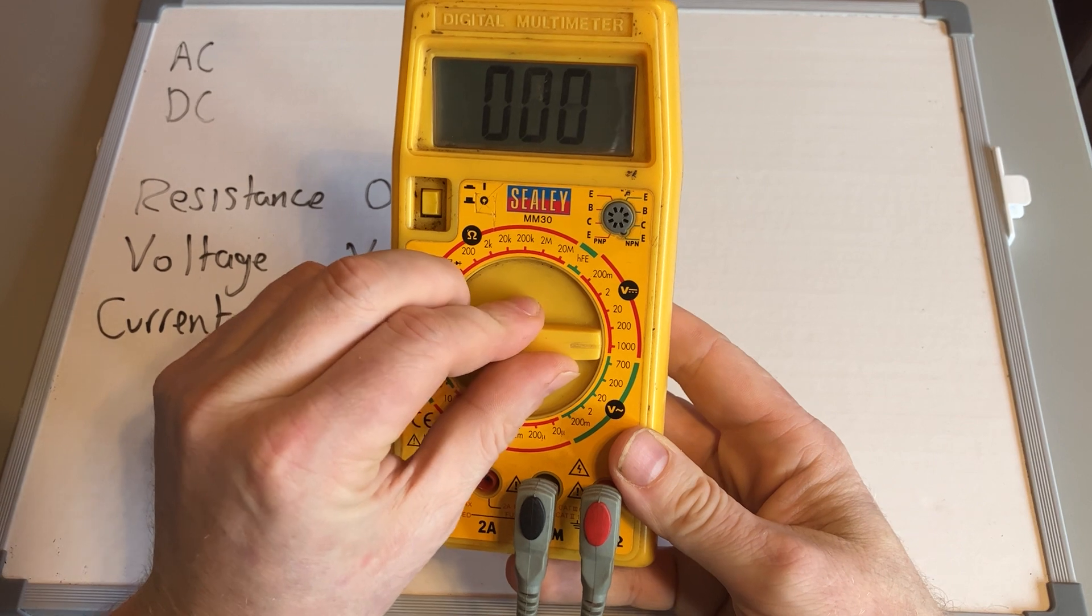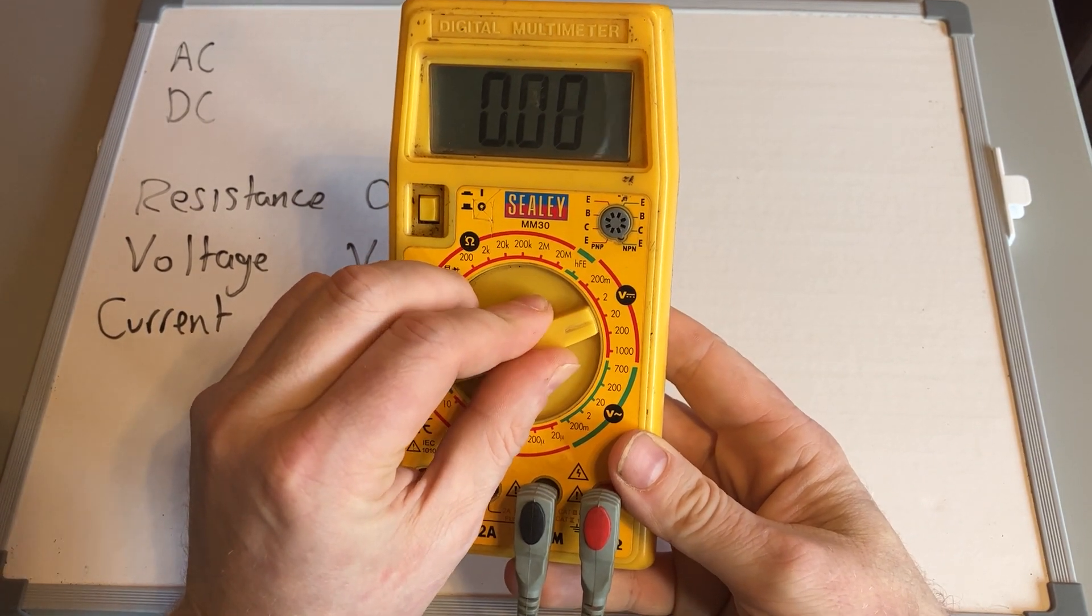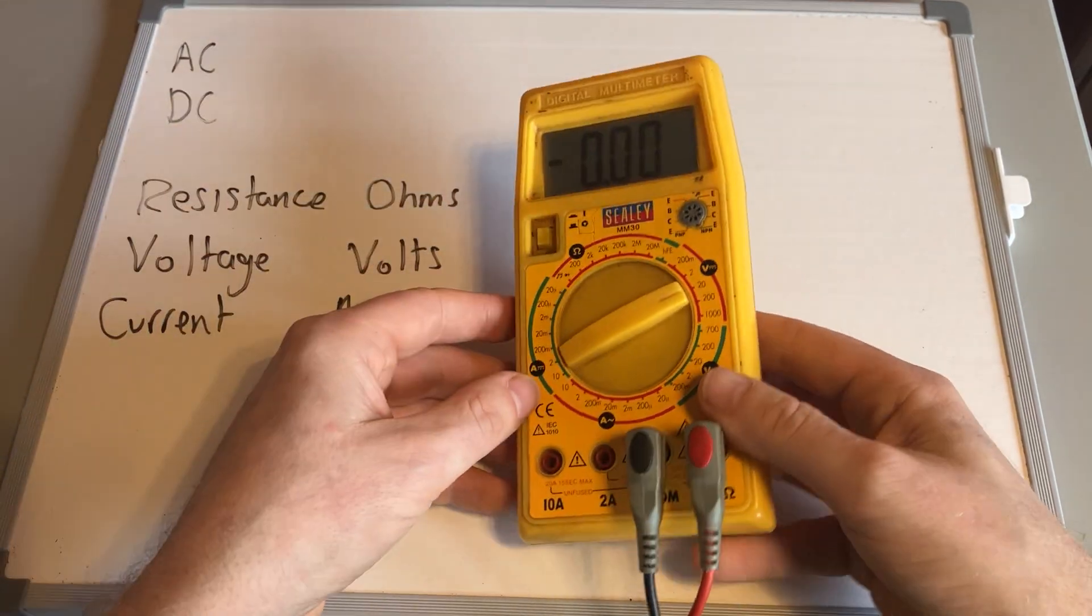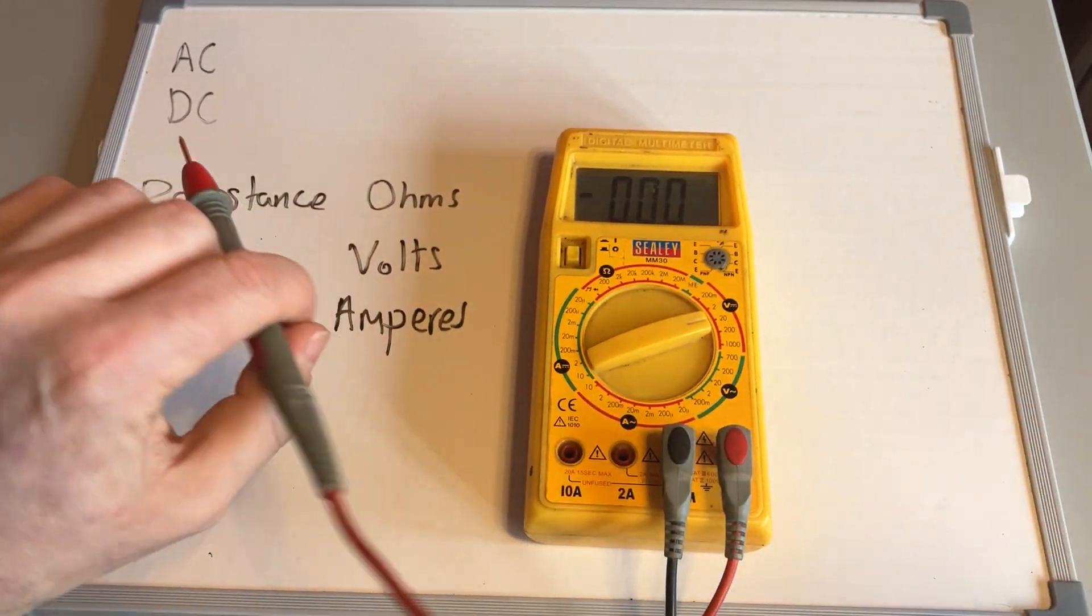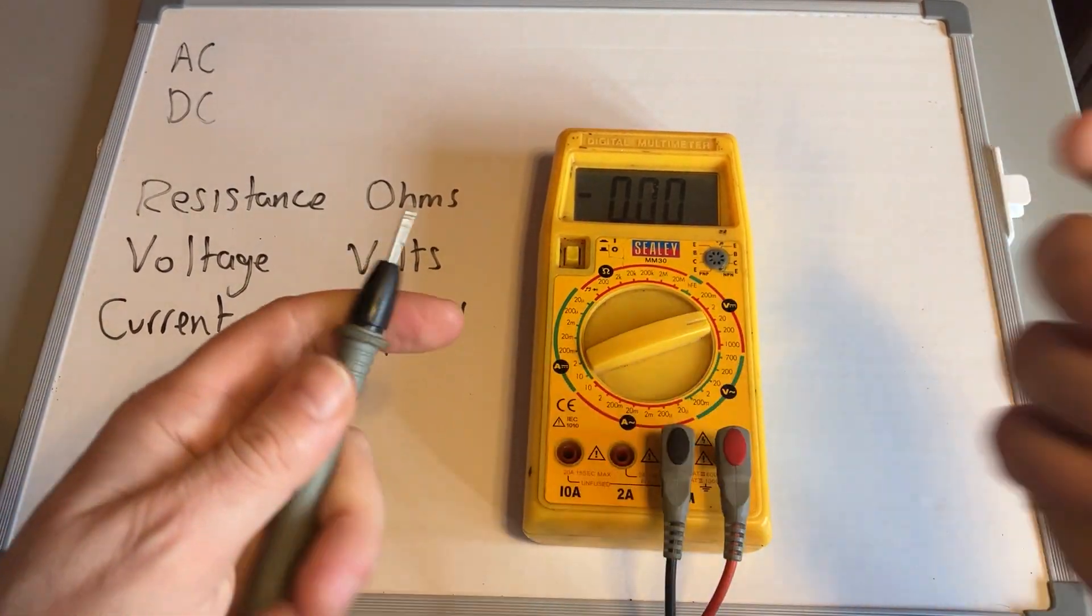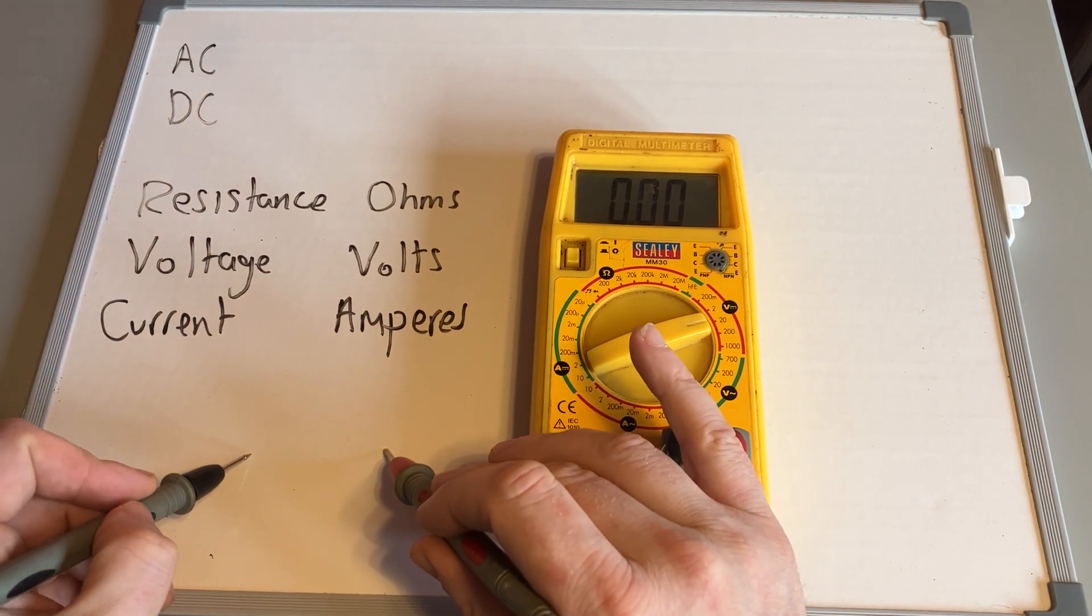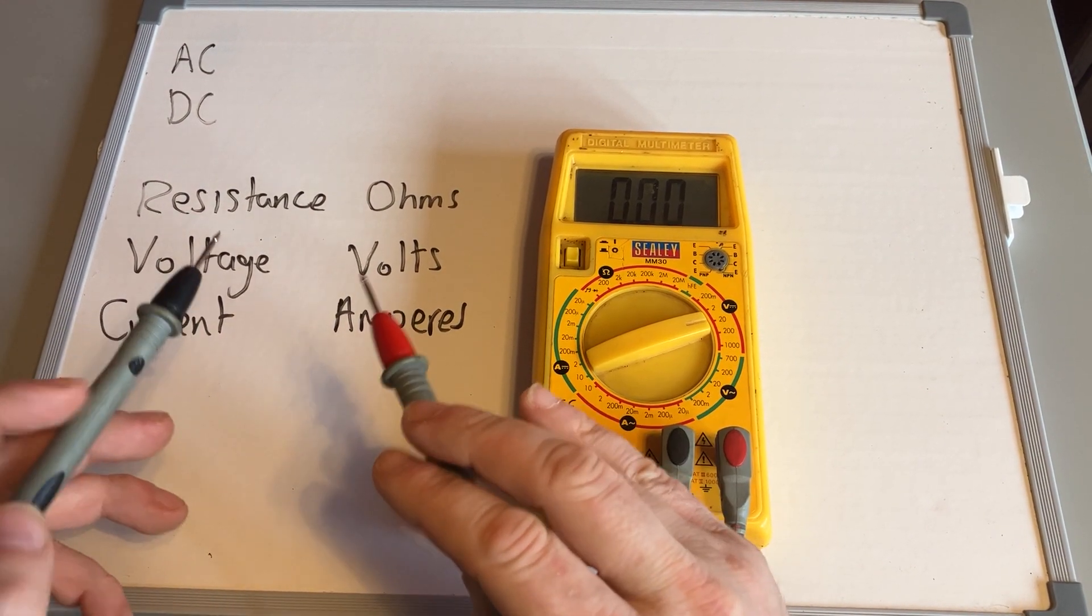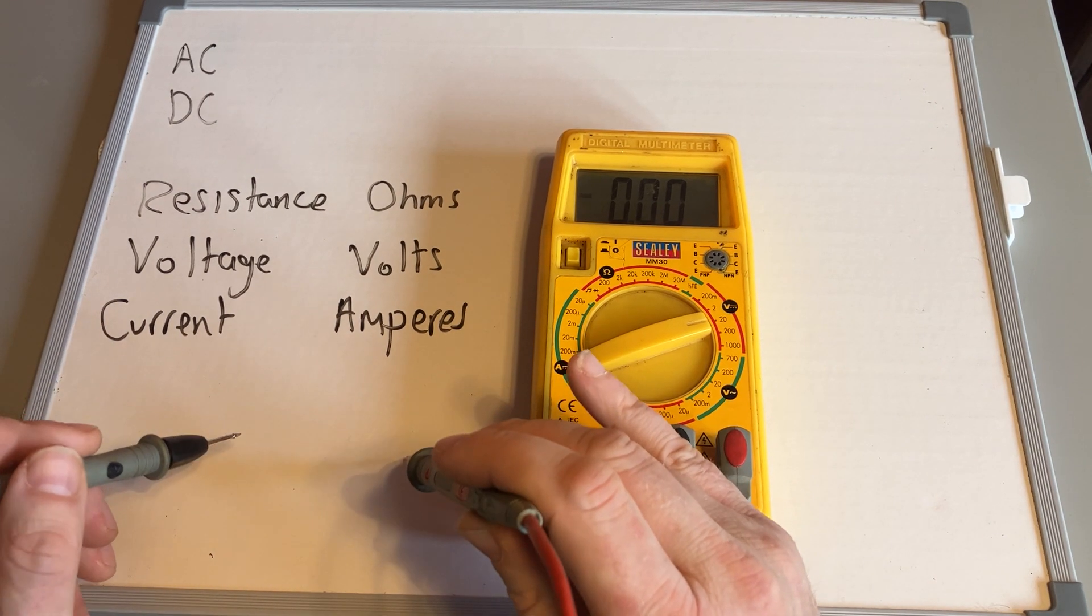Again, if you are not sure, start on the highest setting and work down. If you're working on a car battery, they're always 12.5 to 12.8 volts if they're healthy, so you put it on the 20 setting. Then you put the multimeter leads onto the circuit. The thing with voltage is you don't break the circuit; all you do is take a reading from it.